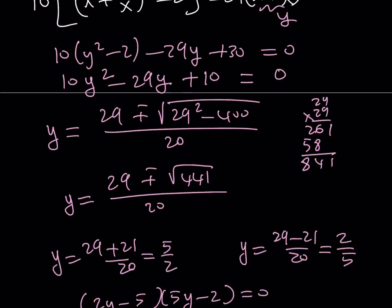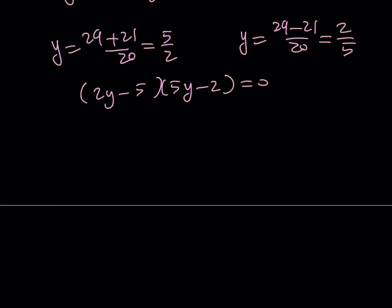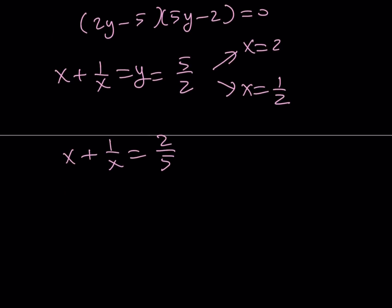So those are the solutions for y. But are we looking for y? No. We're looking for x, but x plus 1 over x is equal to y. So let's go ahead and do that. x plus 1 over x is equal to y. And if you set the y equal to 5 halves, you're going to notice that x can be 2. Because 2 plus 1 half is 5 halves. But the same thing is also true for 1 half. What happens if x plus 1 over x is equal to 2 fifths? Can we find that easily? This is not that straightforward. But at least we got two real solutions.